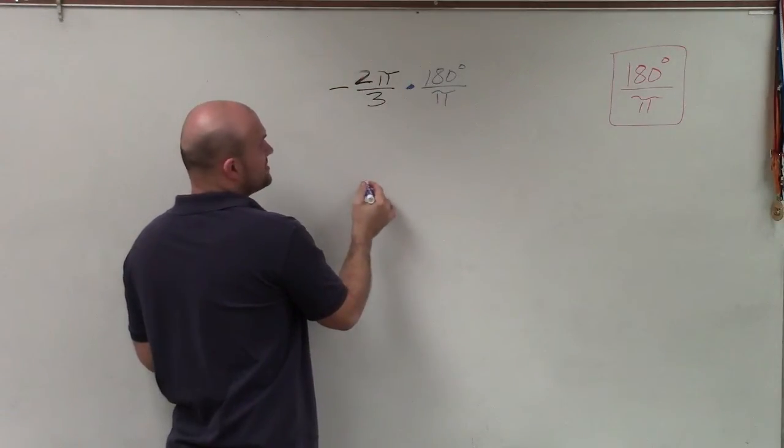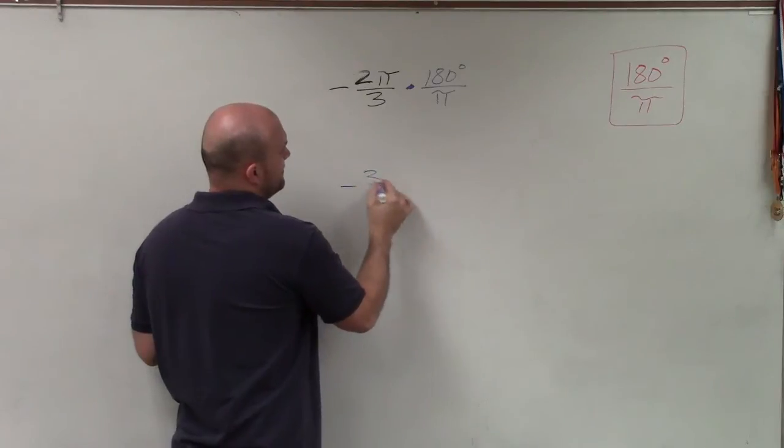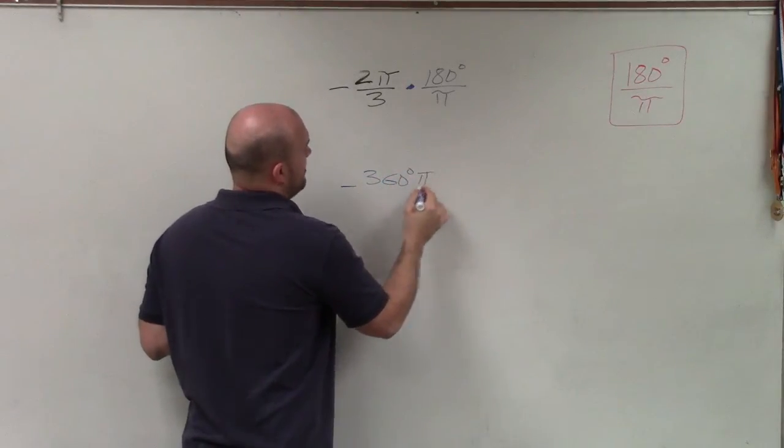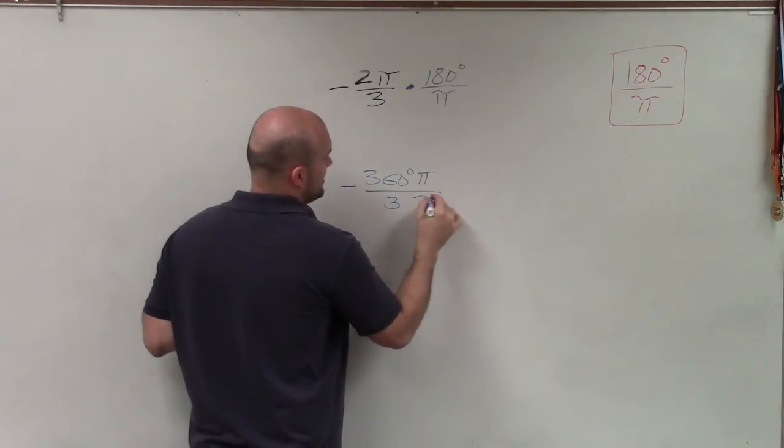So 2 times 180 is 360. So I have negative 360 degrees π divided by 3π.